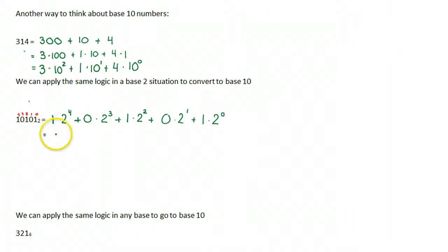So now I can just simplify this. So this is like saying 1 times 16, 0 times 8 plus 1 times 4 plus 0 times 2 plus 1 times 1. And then I can rewrite this as 16 plus 4 plus 1, which is 21. So 1, 0, 1, 0, 1 in base 2 is simply 21.